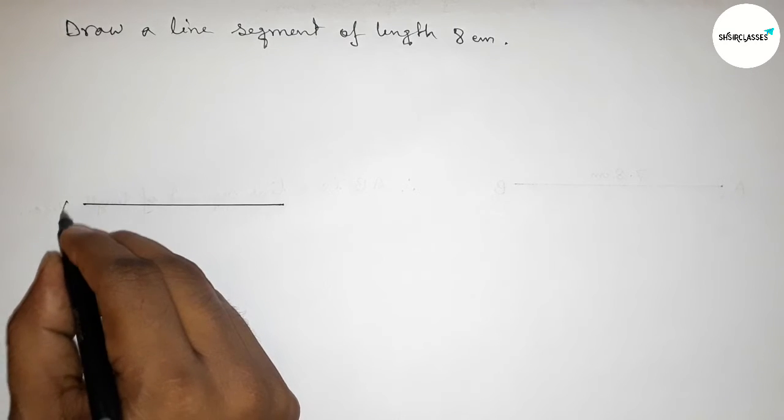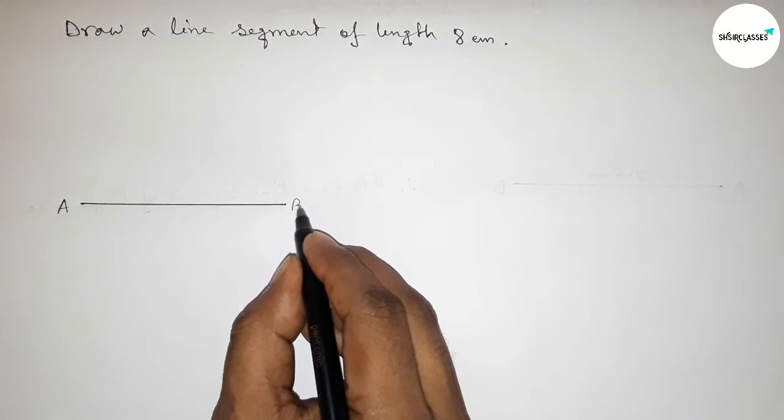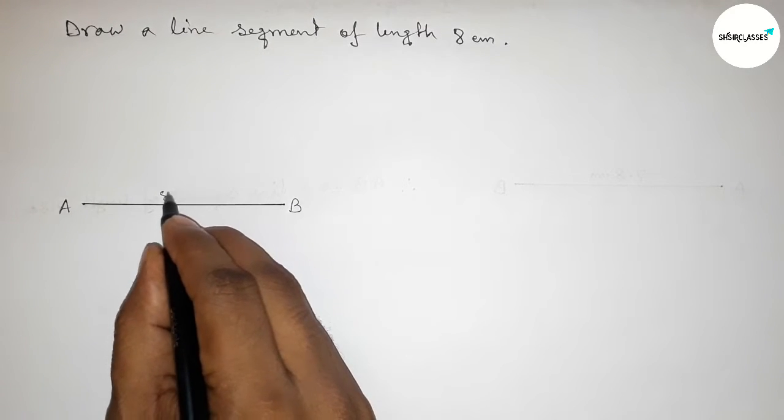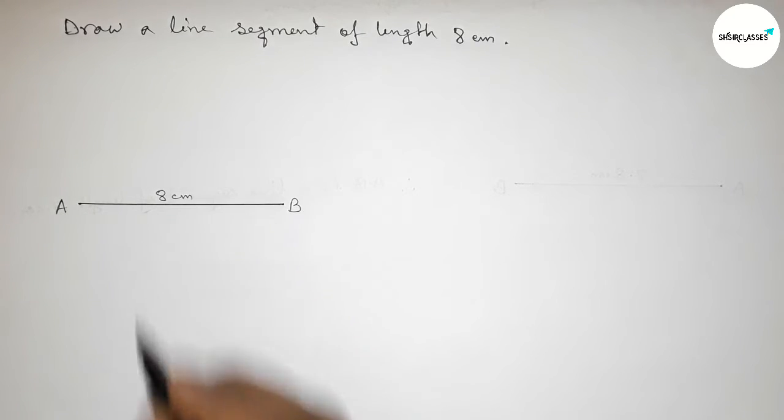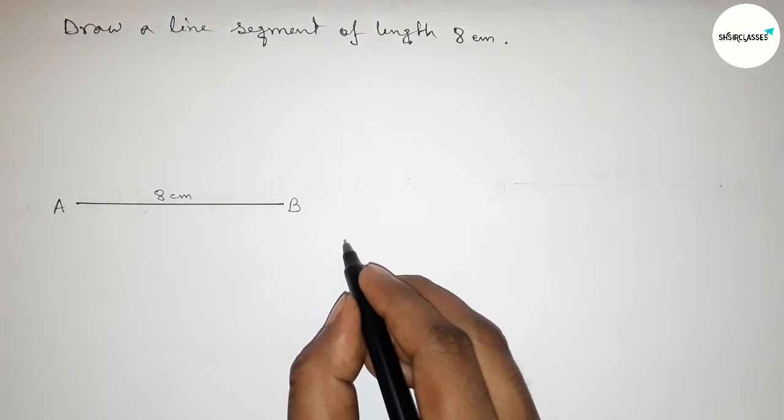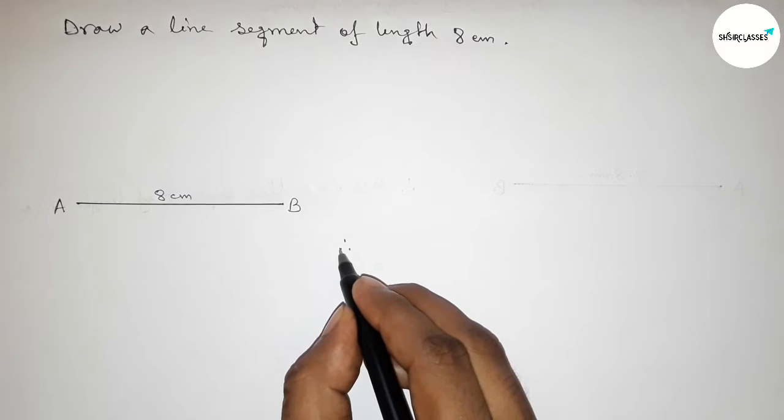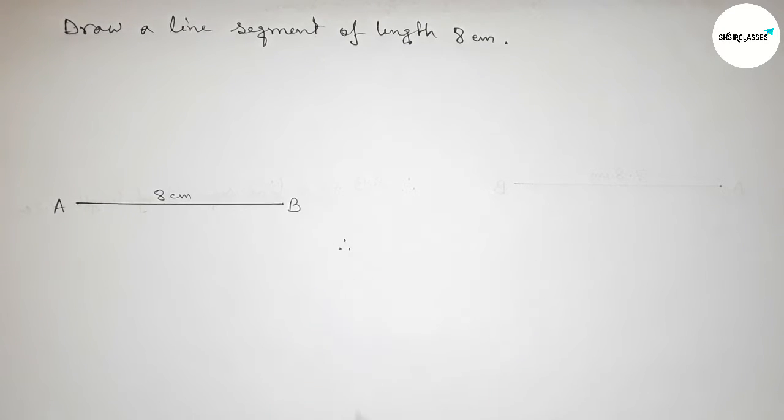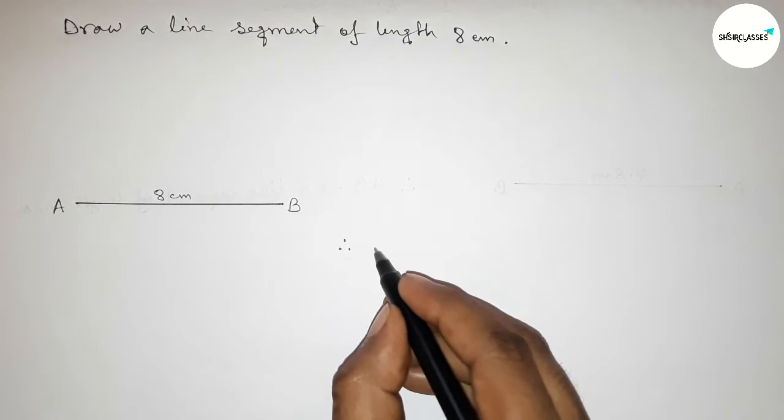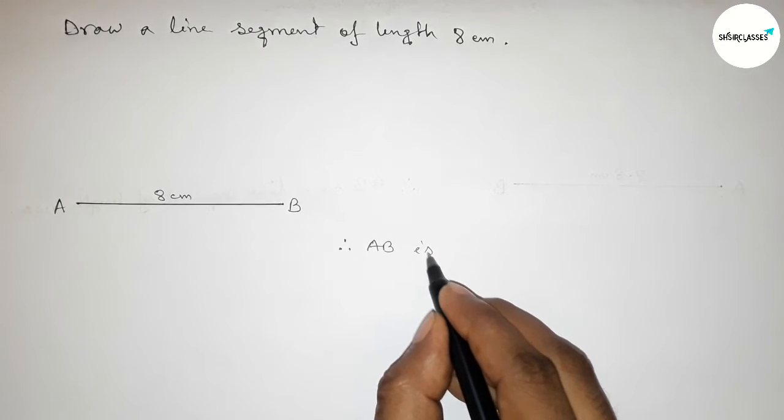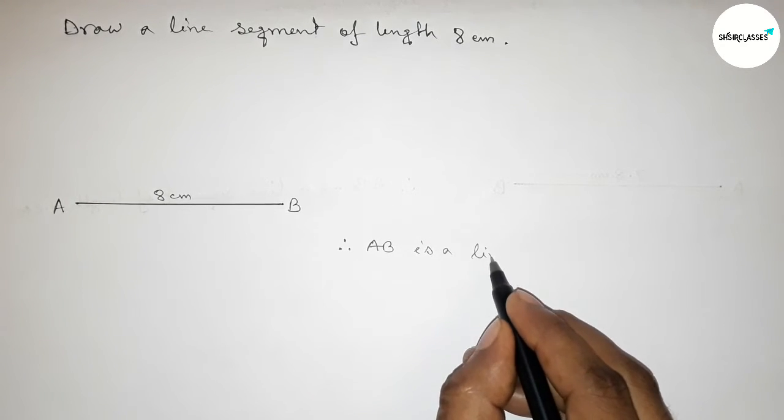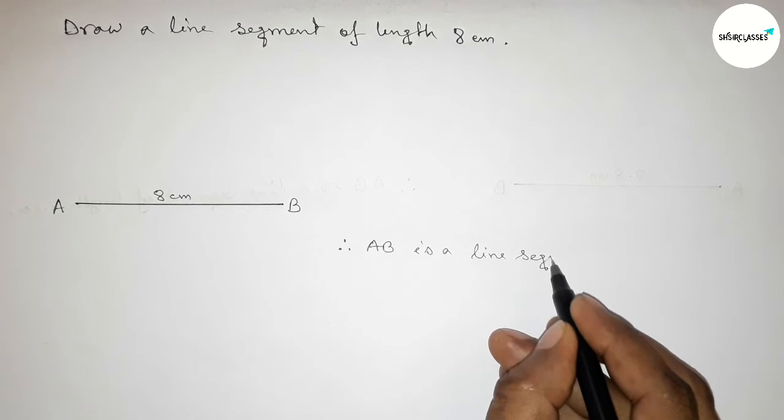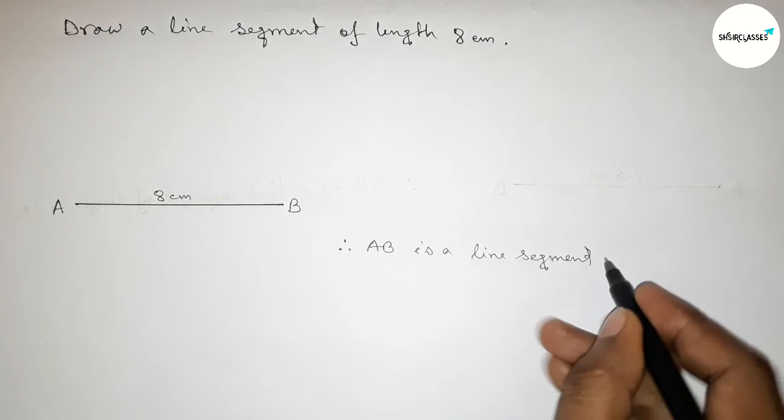Next, take point A here and point B here. So AB is a line segment of length eight centimeters. Therefore we can say that AB is a line segment of length eight centimeters.